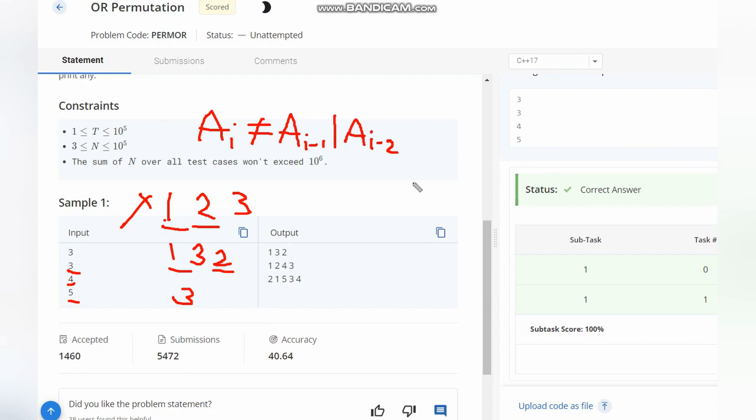Suppose, if I take a permutation of, instead of 1, 3, 2, I am taking 3, 2, 1, so when I check 3 and 2, the OR of 3 and 2 is 3.